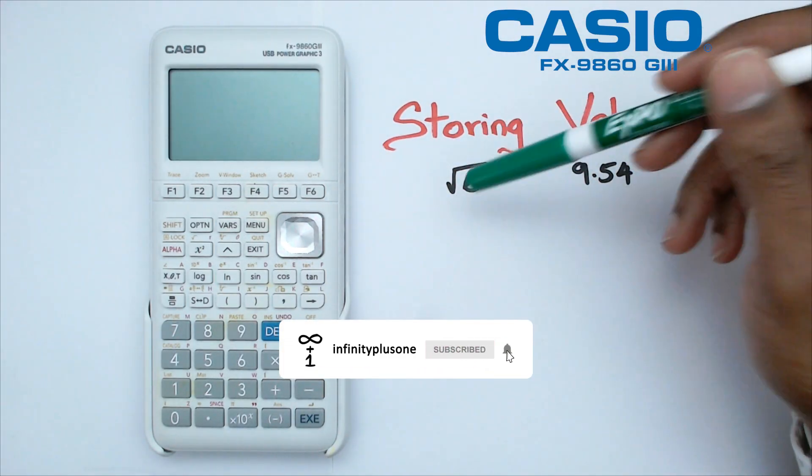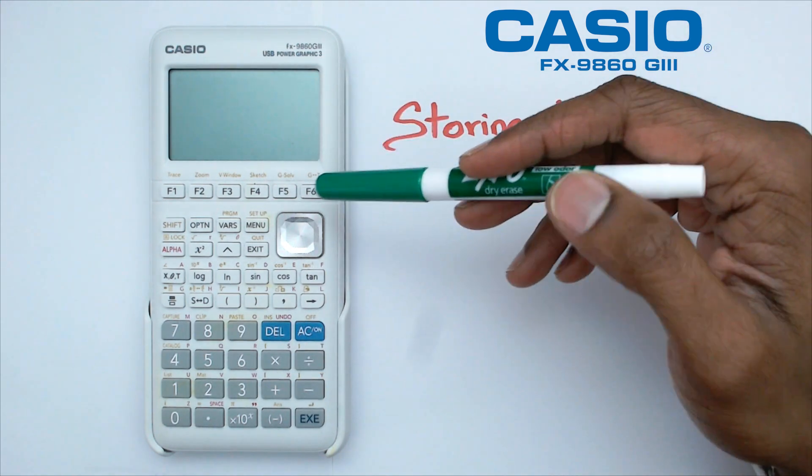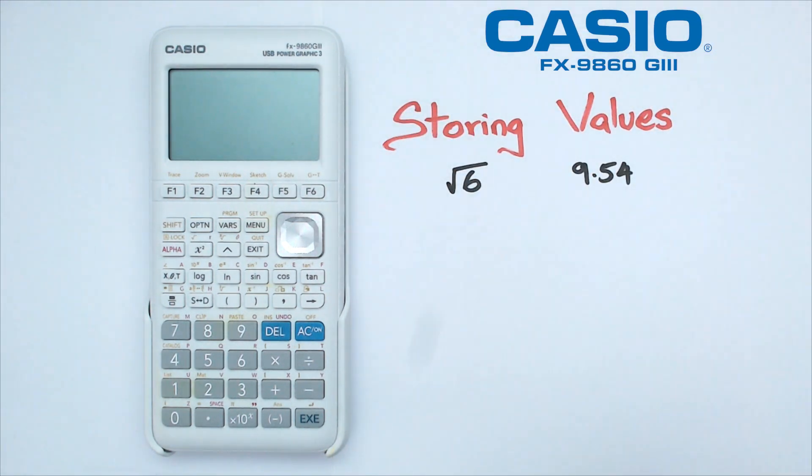We've got basically two values here: we've got square root of six and 9.54. Now the one good thing about this particular calculator is that you can actually store these values and reuse them as many times as you want.